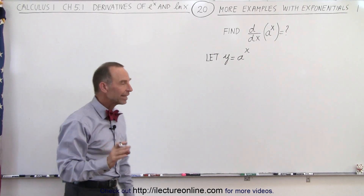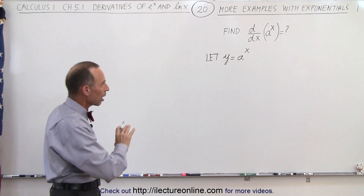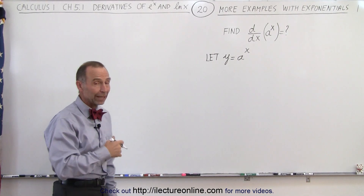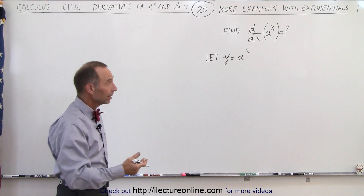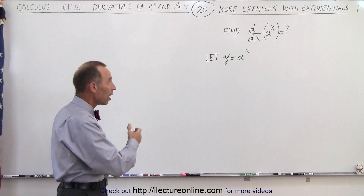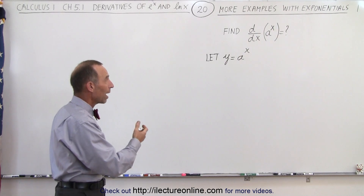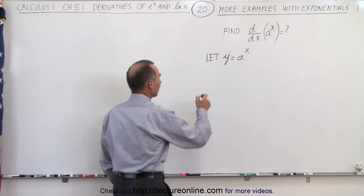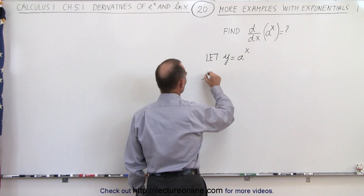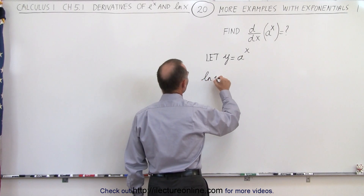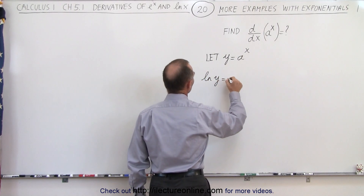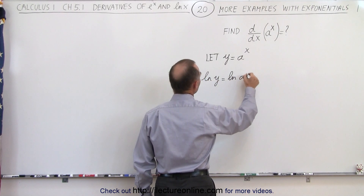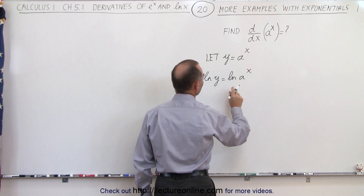Now we're going to take the natural log of both sides. So if y is equal to a to the x, then the natural log of y equals the natural log of a to the x. So the natural log of y must therefore equal the natural log of a to the x.